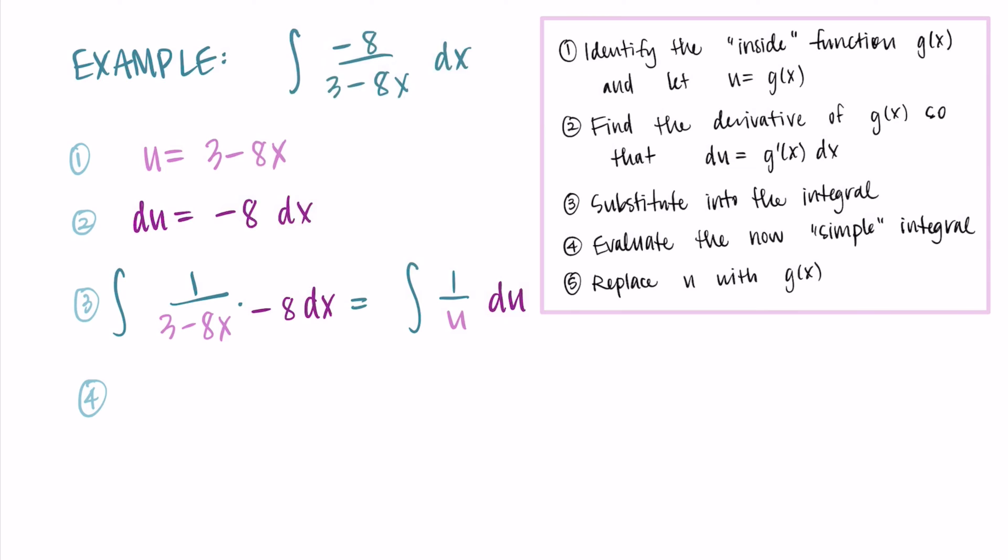Now I have an integral that is entirely in terms of u, and I can solve it just using u's. So the antiderivative of 1/u for step four is the natural log of absolute value of u with my plus C. And to finish off the problem, I just need to replace u with 3-8x. And I'm getting my final solution is the natural log of |3-8x| + C.